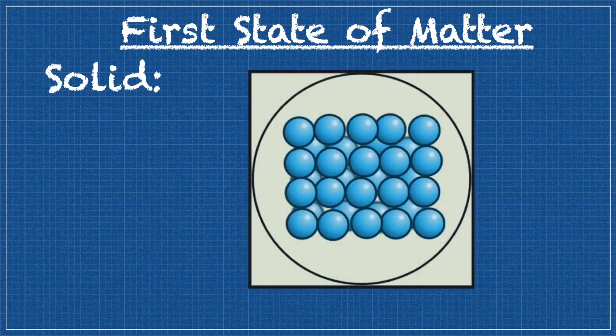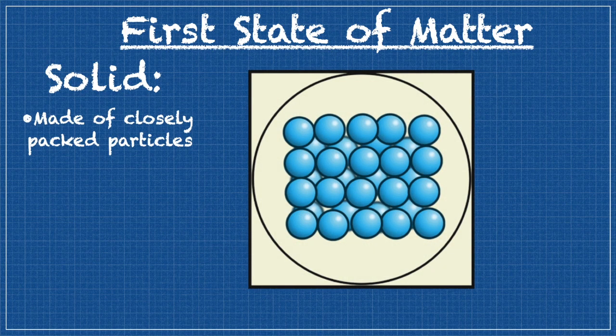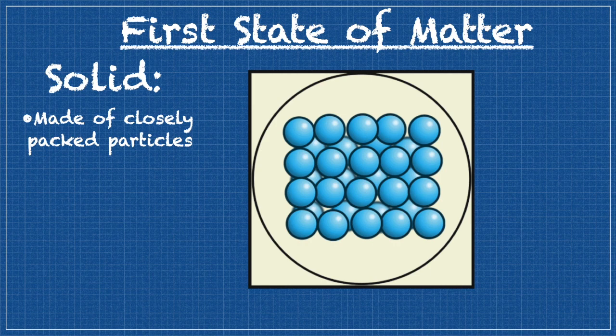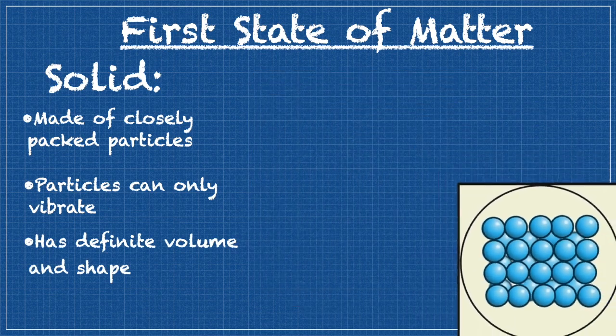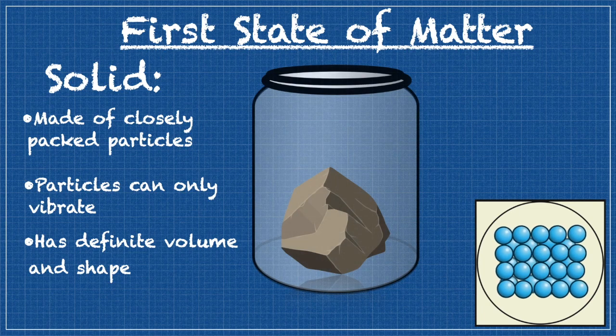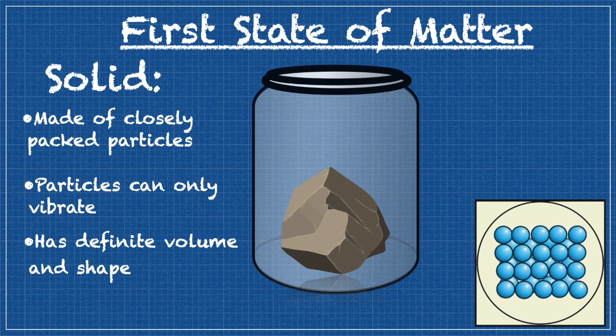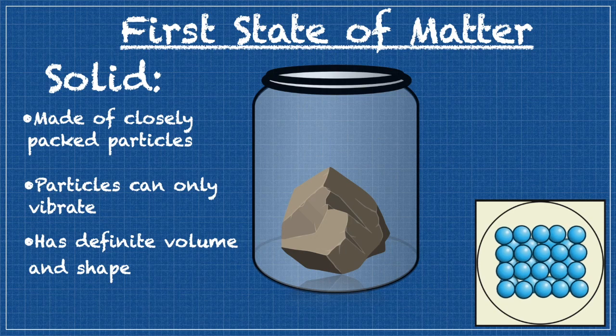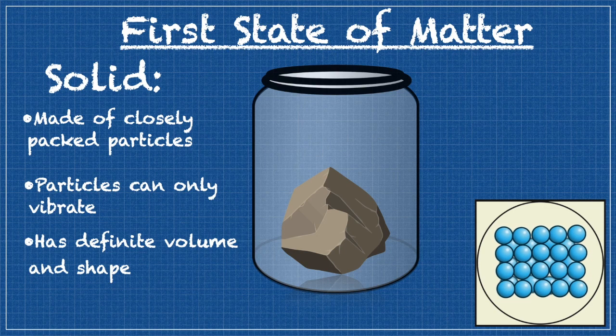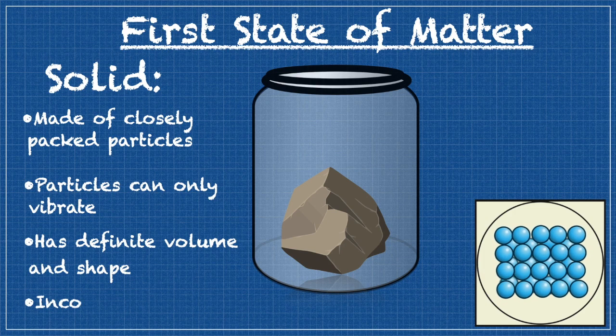The first state of matter is made of closely packed particles. The forces between the particles keep the molecules from moving around freely. They can only vibrate. Therefore, a solid has definite volume and shape. For example, a rock in a jar will not reshape itself to form to the jar. Solid will always retain its size and shape as long as there are no outside influences. For this reason, a solid is classified as incompressible.